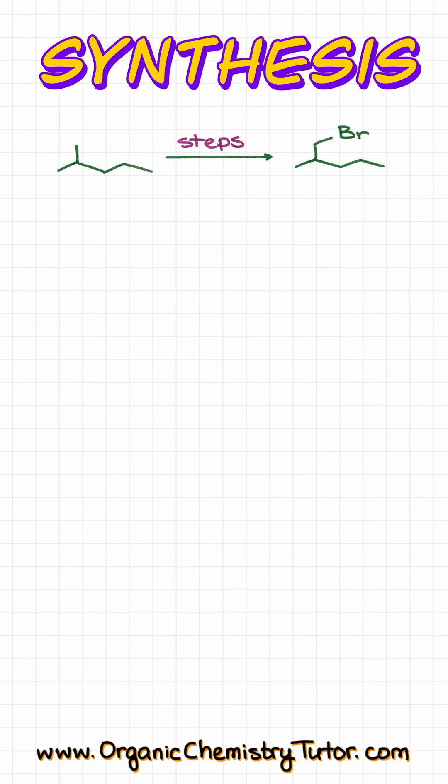So, how would you accomplish this synthesis? Well, let's see. We have a simple alkane as our starting material, and we end up with bromine on the primary carbon on one of our chains.